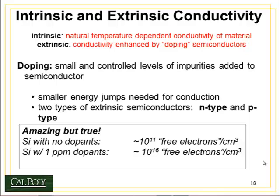What's important to recognize is that small amounts of dopants — let's say one part per million — can have dramatic effects on the number of free electrons in a material, as much as five orders of magnitude increase. That's an amazing change in the conductivity of a material.